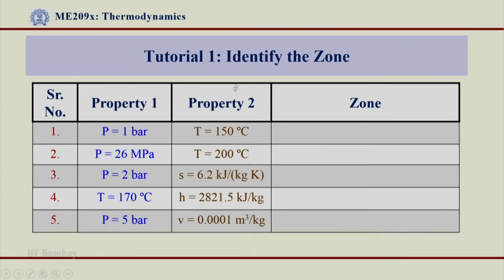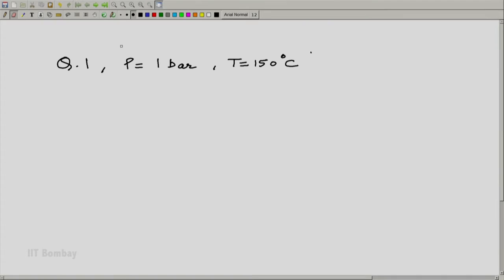The first problem is to identify the zone where our system is at 1 bar: pressure is 1 bar and temperature is 150 degrees centigrade. Now let us use steam tables and I will solve this problem for you as a tutorial, and then you will have a lot of problems for assignments later on. Question number 1: p = 1 bar and T = 150°C.